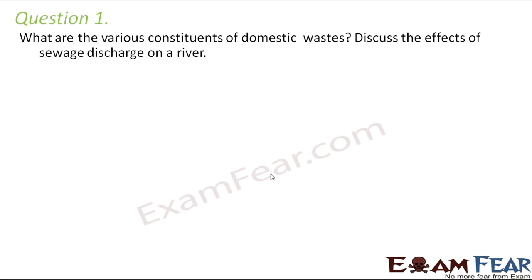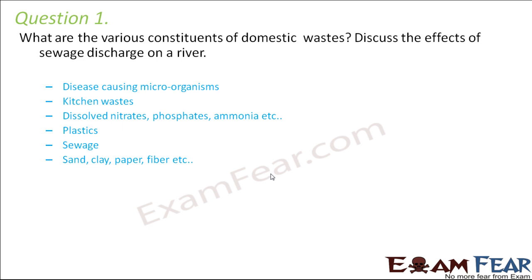What are the various constituents of domestic wastes? Domestic wastes can contain a lot of things: disease-causing microorganisms, kitchen wastes, dissolved nitrates, phosphates, ammonia, plastics, sewage, sand, clay, paper, and fiber. So a lot of these can come out of our domestic household and be a part of domestic waste.